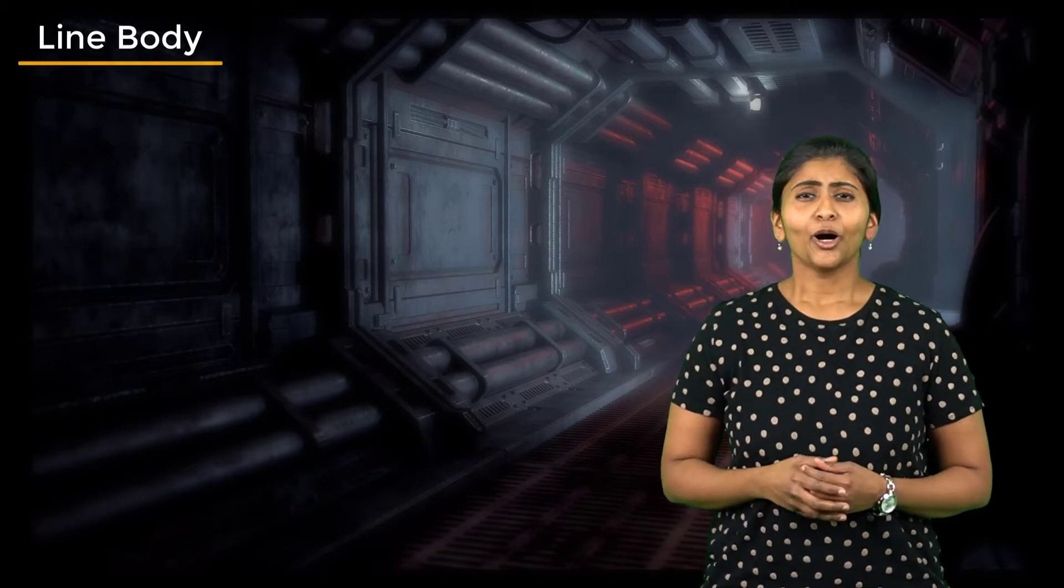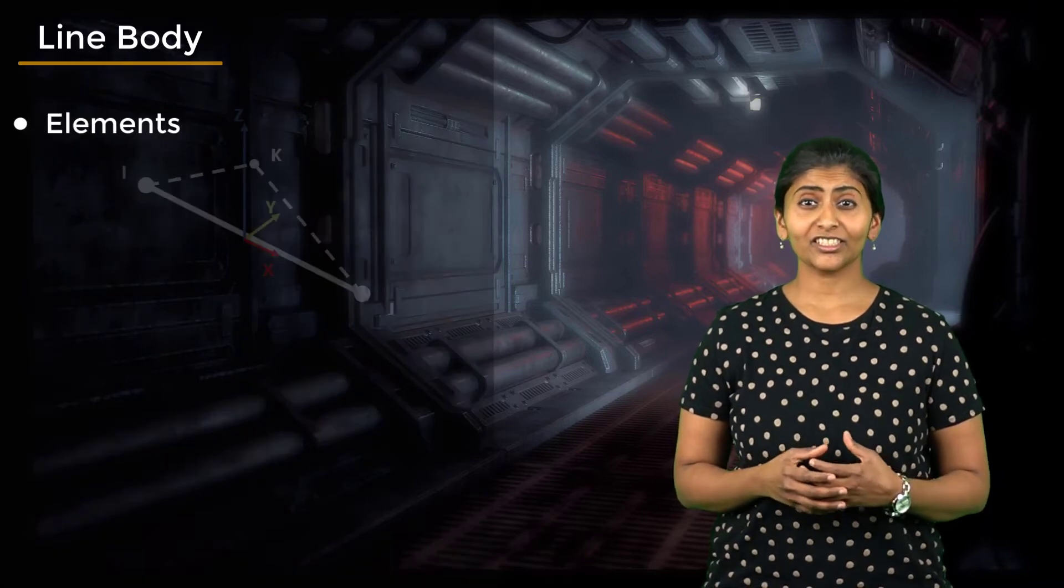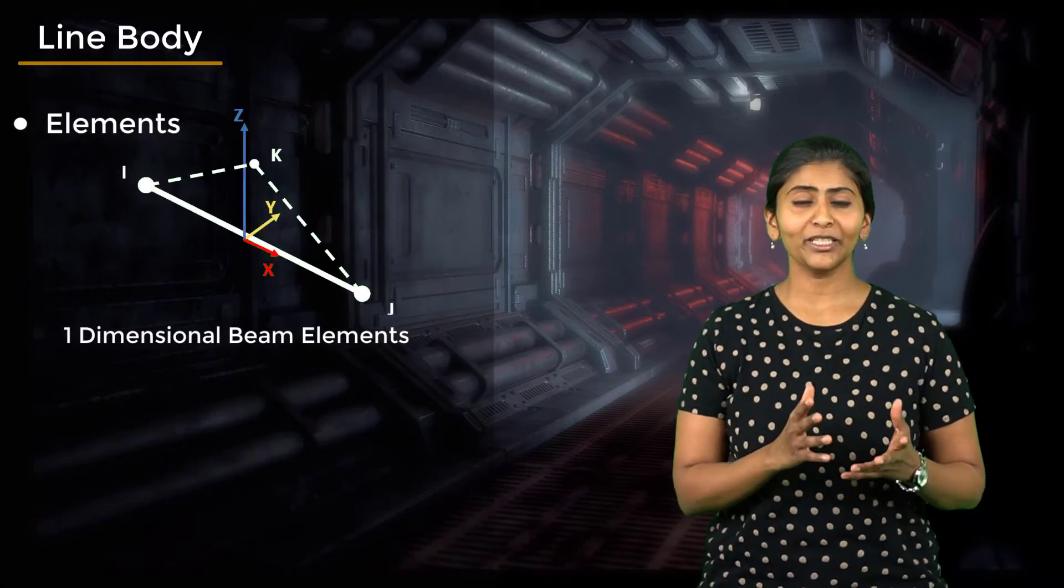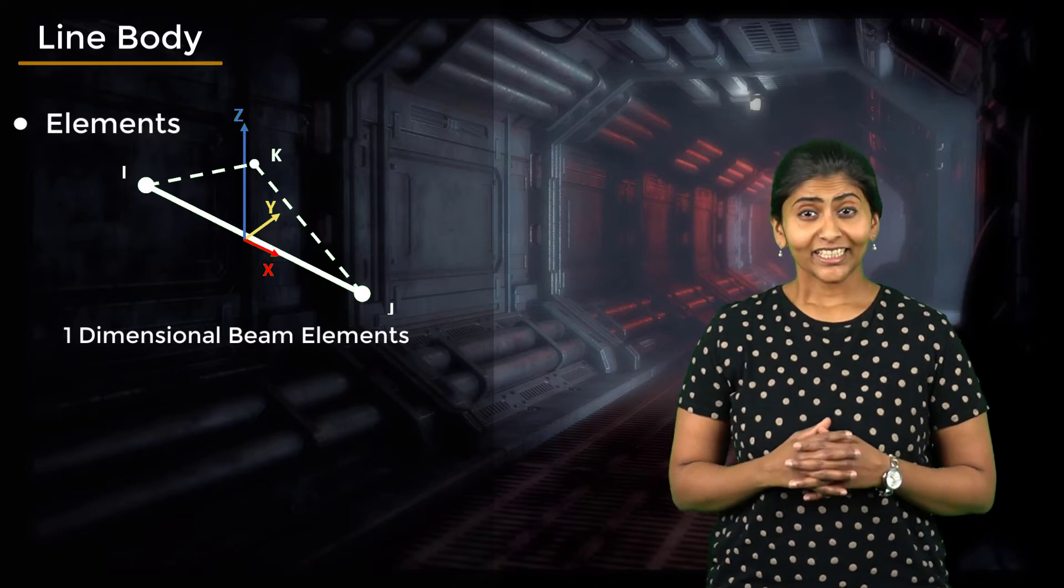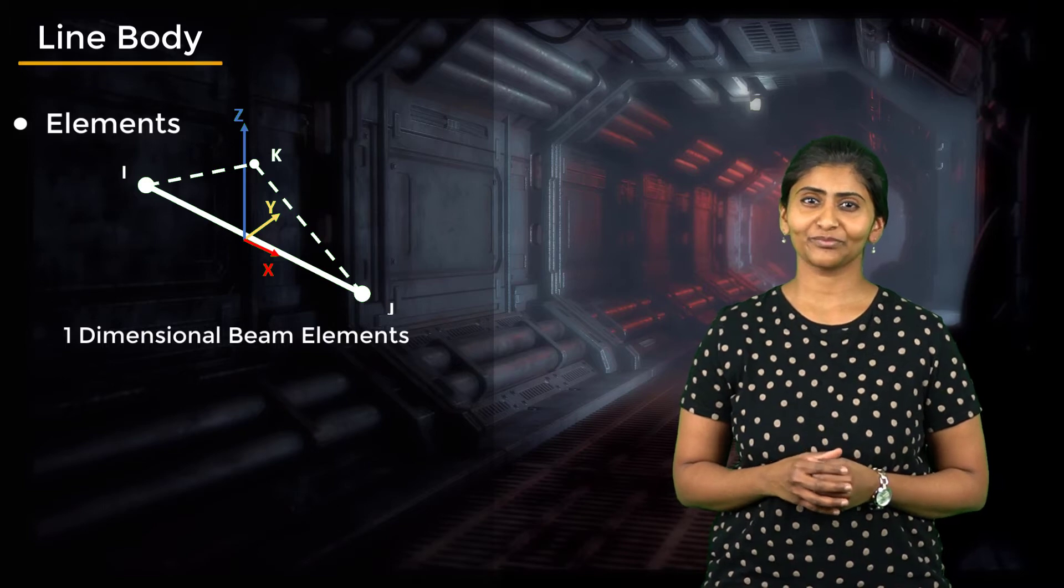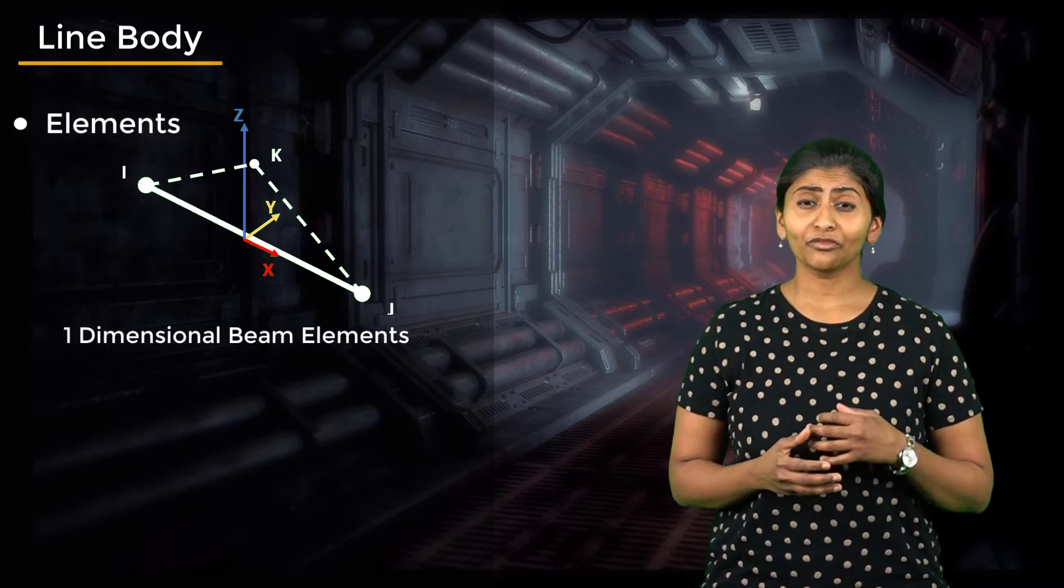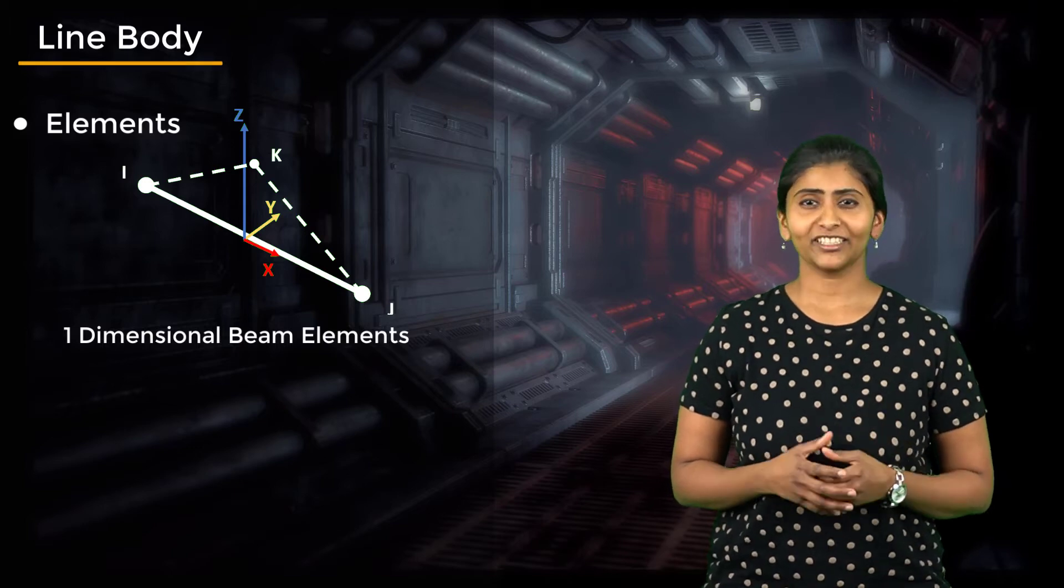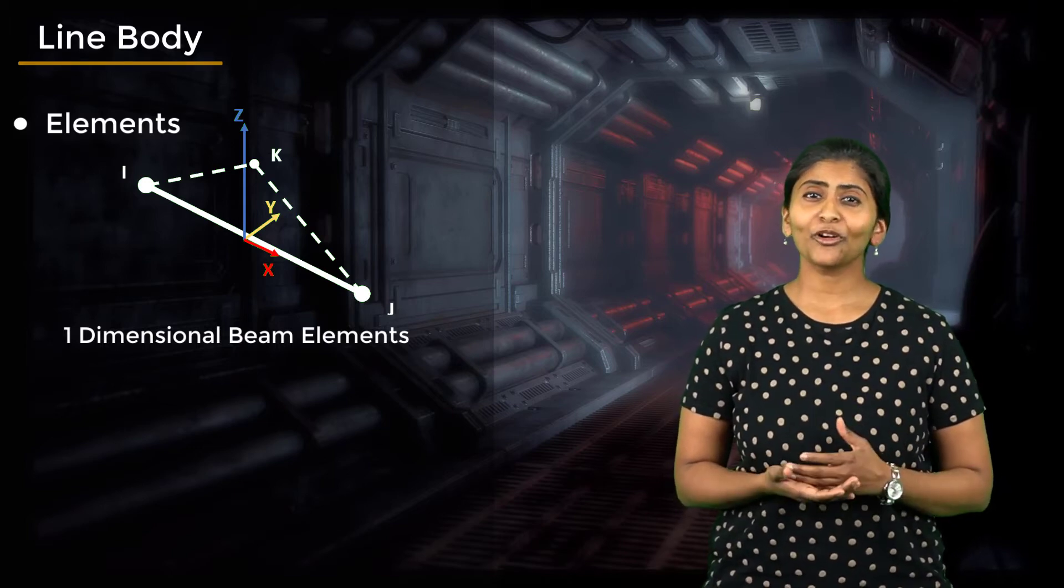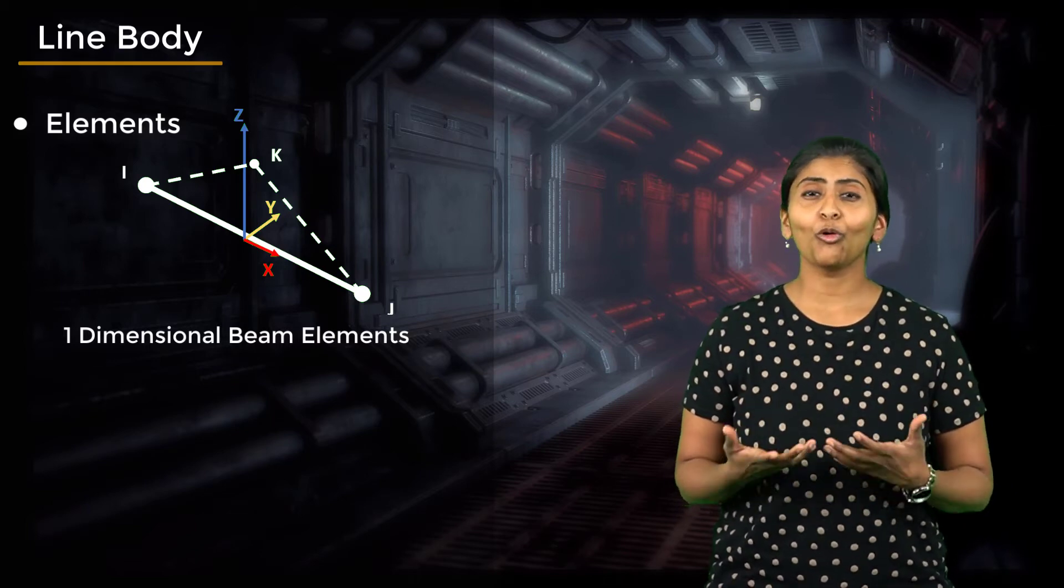The second way of representing bolts is by using line bodies. Bolts modeled as line bodies are discretized using one-dimensional two or three-noded beam elements. Each node has three translational and three rotational degrees of freedom. Due to the low node count, the total number of degrees of freedom becomes less. Thus, beam models can be solved faster and are computationally more efficient.